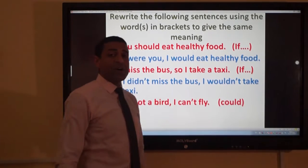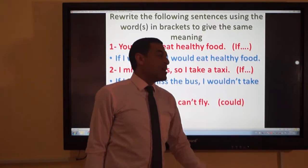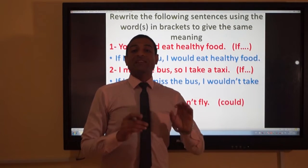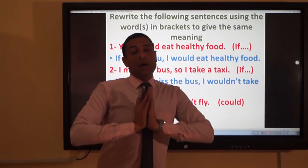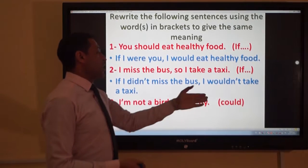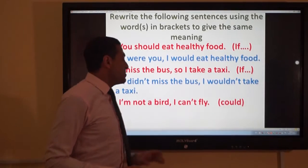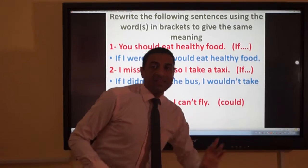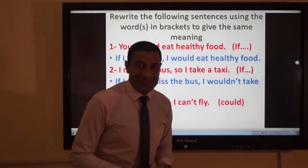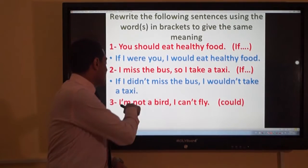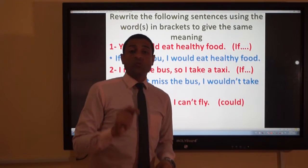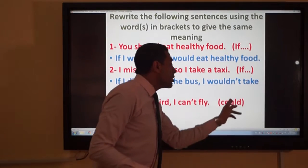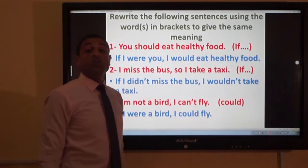Exercise three: 'I am not a bird. I can't fly. Use could.' This expresses impossibility — something that cannot happen. The original sentence is negative, so when I use the second conditional I change it to affirmative: 'If I were a bird, I could fly.' This is the type of rewrite question you can find in exams.